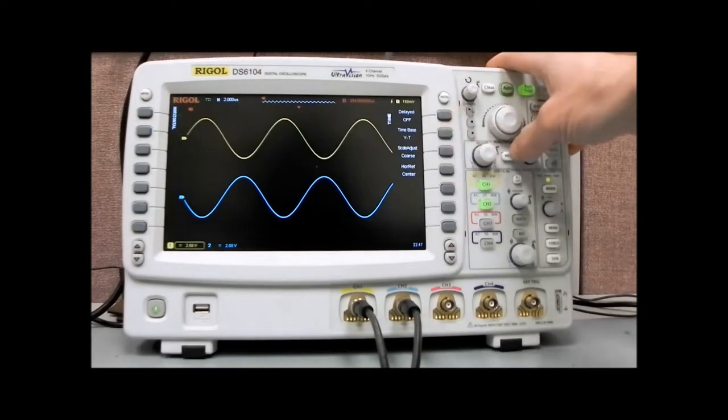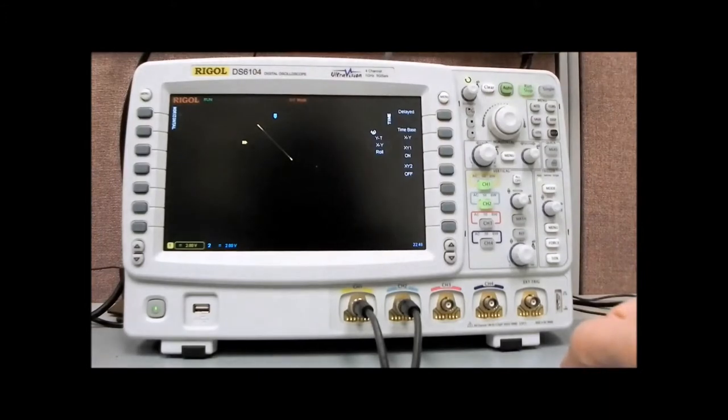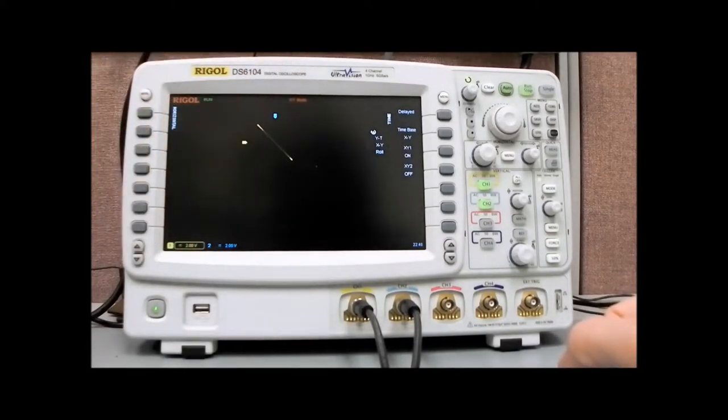And so we go to menu in the horizontal, and we change the time base to X versus Y, and now you'll see that we have a line that's been drawn. The reason that we have a line is, again, this is channel one versus channel two being plotted.